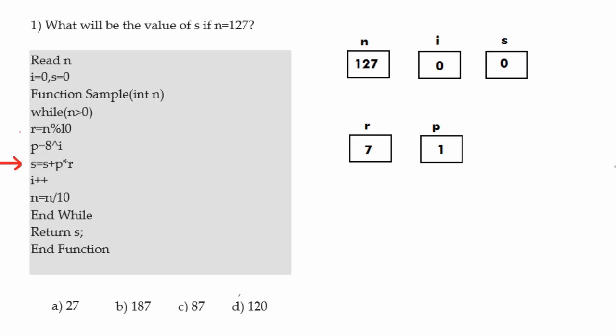Next, s equals s plus p times r. We evaluate p times r: p is 1 and r is 7, so 0 plus 1 times 7 gives us 7. So s is assigned 7. Then i increments by 1 (i becomes 1). Next, n equals n divided by 10, which removes the 7 from 127, so n becomes 12.